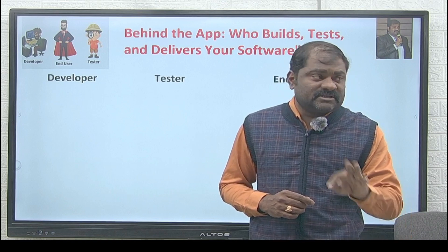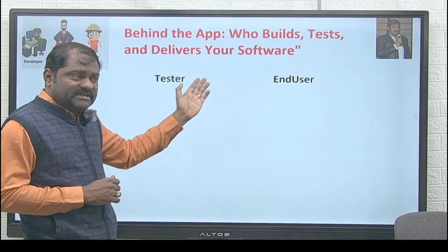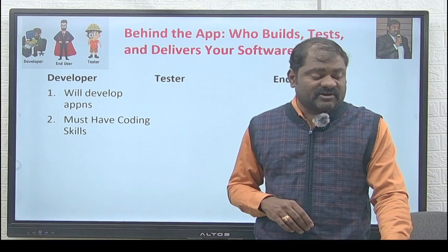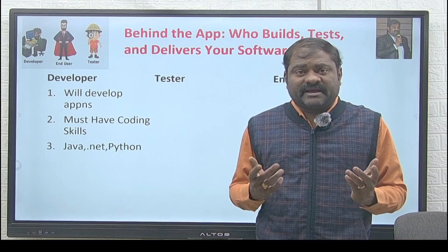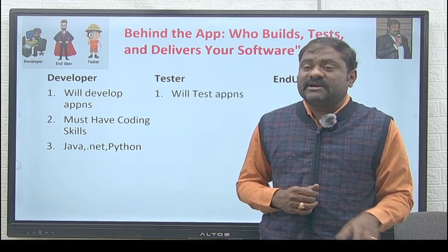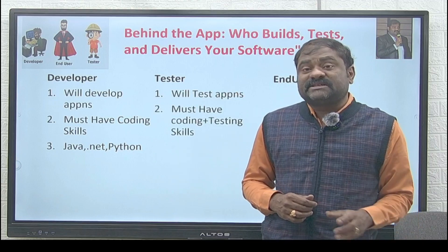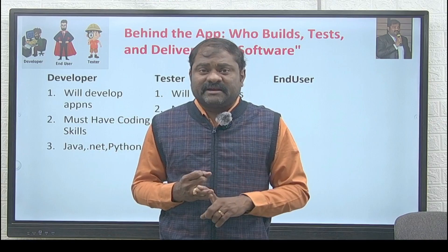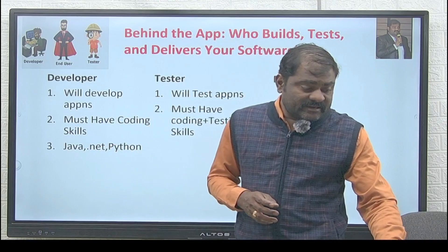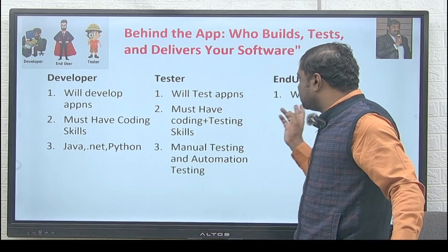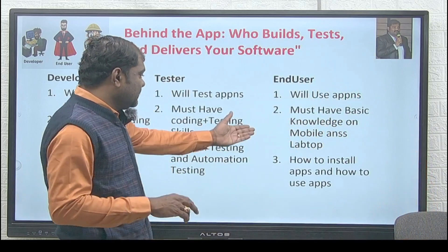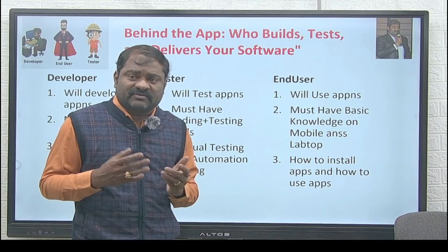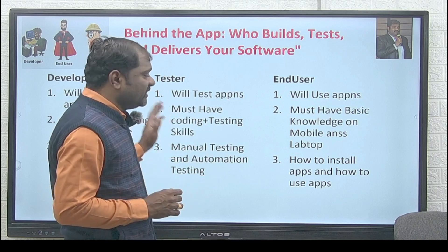Before going into Git and GitHub, you must know three main characters: the developer, the tester, and the end user. The developer develops applications and must have coding skills — knowledge of Java, .NET, Python, Angular, React JS, and JavaScript. The tester tests the applications and must have coding skills plus testing tool skills like manual testing, automation testing, Selenium, and Playwright.